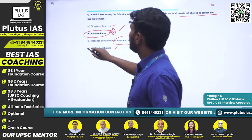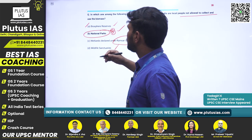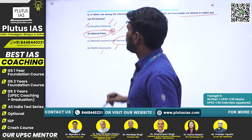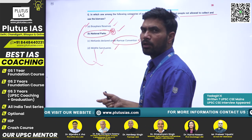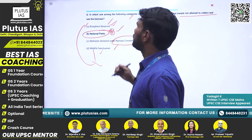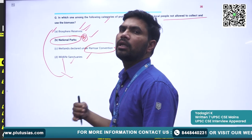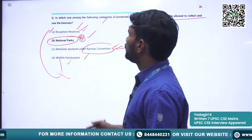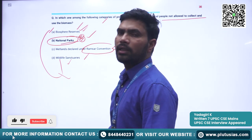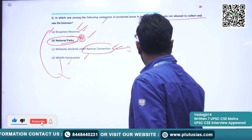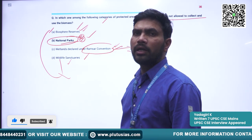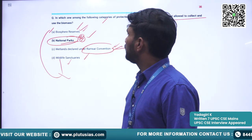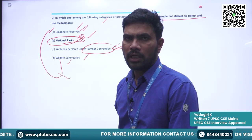Just now we have seen that when it comes to restrictions, Biosphere Reserves and Wildlife Sanctuaries are somewhat liberal — people can enter and collect biomass there. In Biosphere Reserves, people are actually living in harmony with the wildlife. So the answer becomes National Parks. That is all for today. I hope you have garnered some important information. Thank you for joining the class. See you next time.